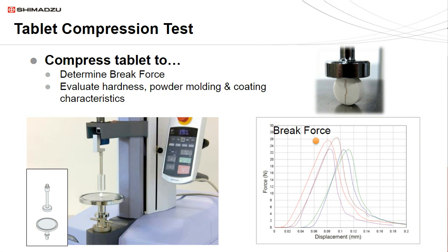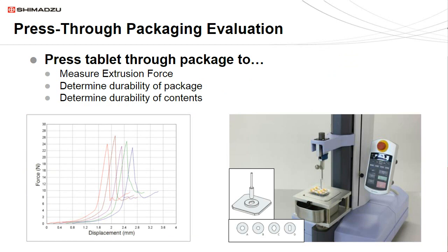This next example shows a test for pressed-through packaging. In this test, the force necessary to eject tablets or capsules out of the packaging is measured. This test is useful for determining the ejection force, but can also be useful for determining the durability of the packaging and its contents. The peak value represents the ejection force. The testing instrument is equipped with a special jig that utilizes various removable adapters, and by replacing adapters, the specialized pressed-through jig can accommodate various shapes and sizes of tablets and pressed-through packaging.